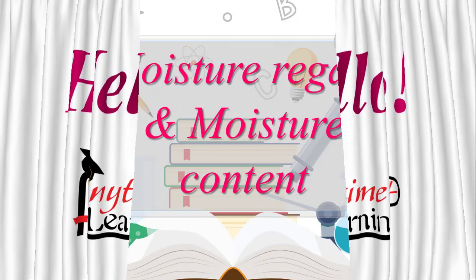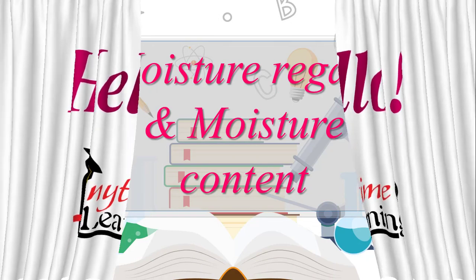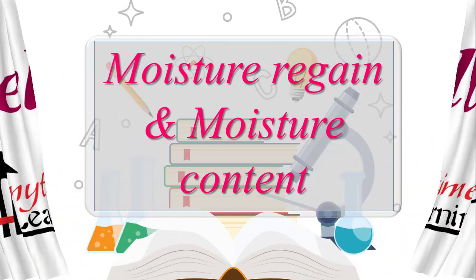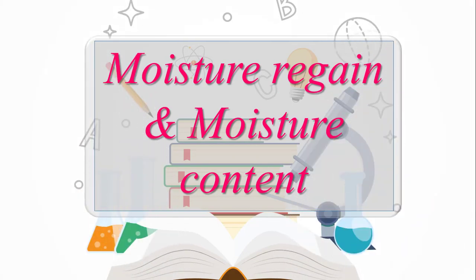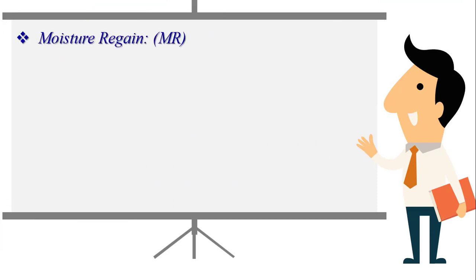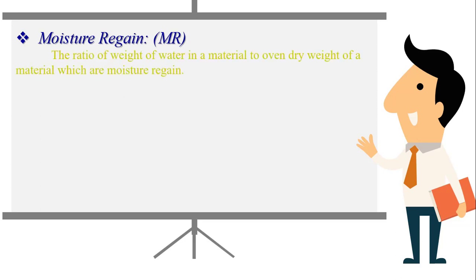Now let's go to moisture regain and moisture content. Moisture regain and moisture content is key. Moisture regain is denoted by MR. The ratio of weight of water in a material to oven dry weight of a material is moisture regain.